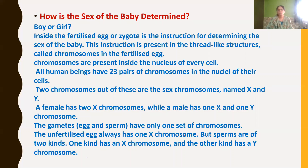The sex chromosomes are named X chromosome and Y chromosome. In females, the sex chromosome pair has only two X chromosomes (XX). But in males, there is one X chromosome and one Y chromosome (XY). The gametes — whether egg or sperm — contain only one set of chromosomes. The unfertilized egg in females always has only the X chromosome.